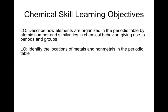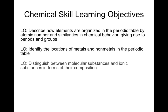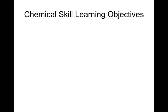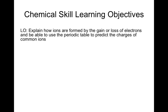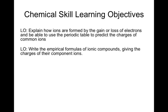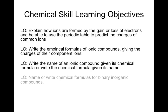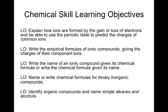You will identify the locations of metals and nonmetals in the periodic table. You will distinguish between molecular substances and ionic substances in terms of their composition, and between an empirical formula and molecular formulas. You will describe how molecular and structural formulas represent molecules. You will explain how ions are formed by gain or loss of electrons and use the periodic table to predict the charge of common ions. You will write empirical formulas of ionic compounds, name ionic compounds given their formula, write the formula given the name, and identify and name simple alkanes and alcohols.